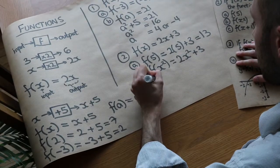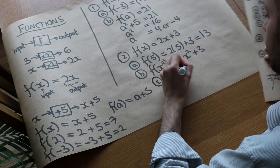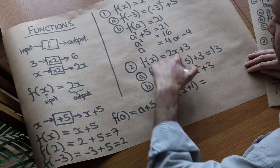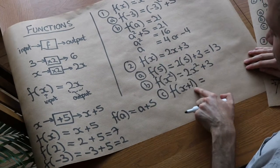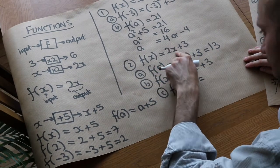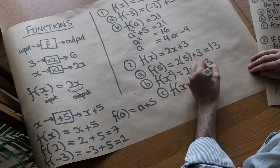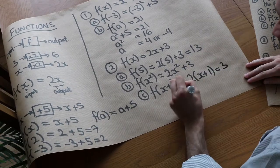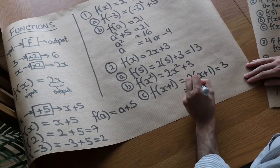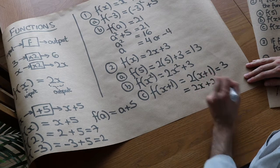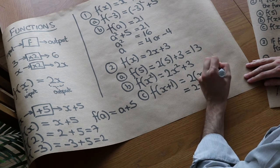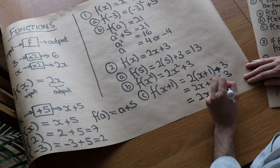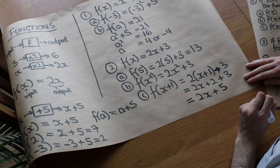And then finally we've got f of x plus one. We substitute every occurrence of x for x plus one. So it's two times x plus one plus three — two lots of x plus one plus three. Let's expand and simplify: that's two x plus two plus three, which is two x plus five. And that is the final answer.